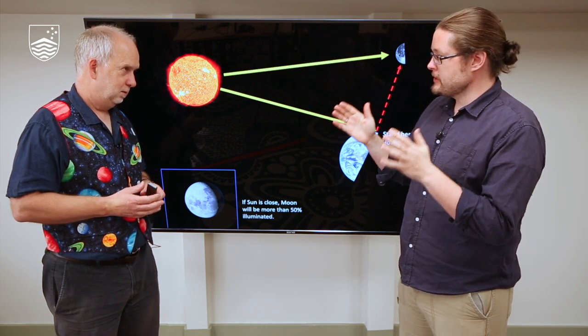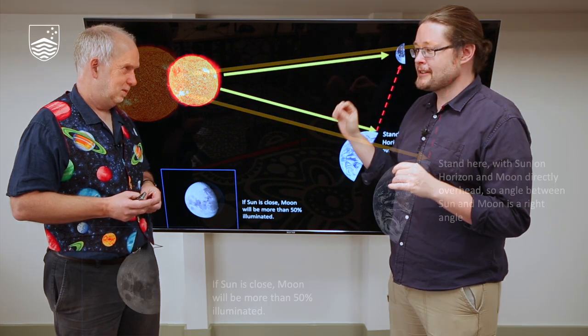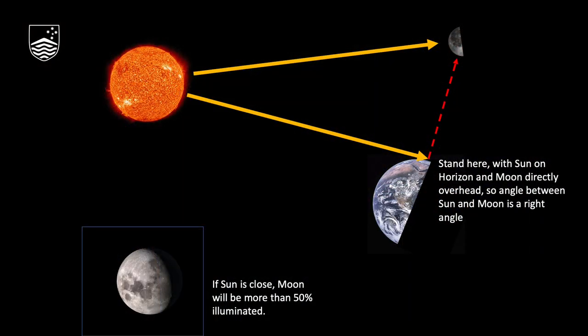So we've now been able to measure a distance to the Moon. Now that's one thing. How do we actually go about measuring a distance to the Sun? We kind of know at least today the Sun is much further. How did they go about doing that?